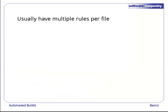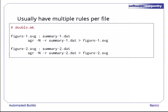If we were only allowed one rule per file, make wouldn't be any simpler than typing commands by hand or putting them in little shell scripts. Luckily, make allows us to put any number of rules in a single configuration file. Here, for example, is another makefile called double.make, with rules to recreate both figure1.svg and figure2.svg. These rules are identical except for the ones and twos in the filenames. We'll see later how to combine these rules into one.